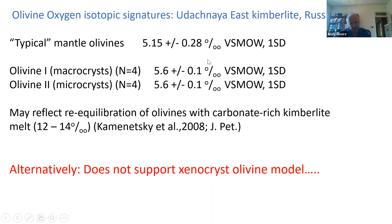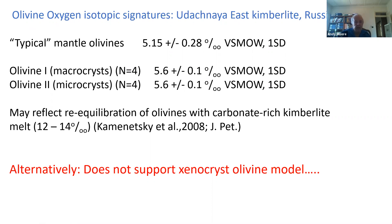There are also some other dissonant features. Analysis of oxygen isotopes for macrochrists and microchrists from the Udachnaya kimberlite shows that macrochrists and microchrists have very similar values — but these are very dissimilar to the values for mantle peridotites at this locality. It was suggested this disparity might reflect reaction of the olivines with a late-stage carbonate-rich kimberlite, but the alternative is that this simply doesn't support the xenocryst model.